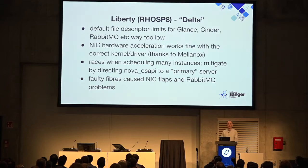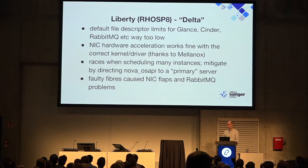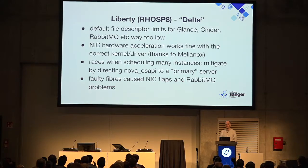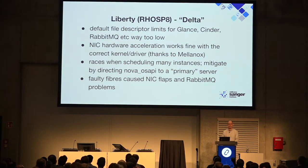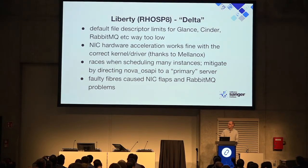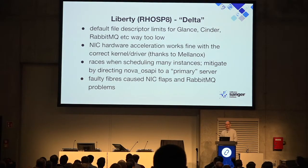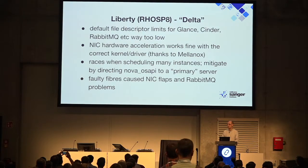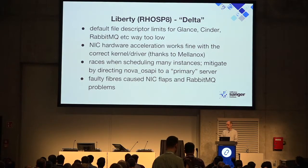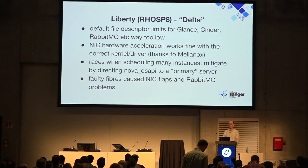Some of the pitfalls we found with Red Hat OpenStack were maybe due to our ignorance and inexperience, maybe due to how it was packaged, maybe due to some assumptions. Scaling is hard — really hard. Defaults for file descriptors and number of threads are always way too low. We had exciting times with hardware acceleration and offloads, talking to Mellanox — there were some good combinations of kernels and drivers and some very bad ones. As soon as we let users on in anger, we found interesting races when starting many instances simultaneously. We mitigated that in Liberty by directing all API calls to one of three HA controllers.